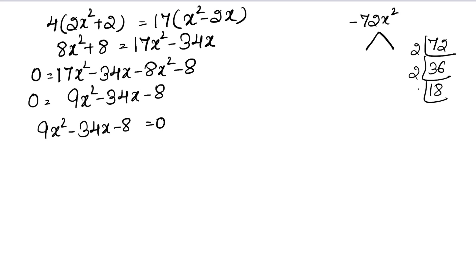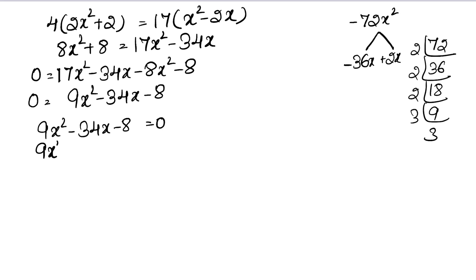Continuing the factors of 72: 18, 36, and 2. We find that 36 and 2 work: 36 − 2 = 34. Since the middle term is negative and they subtract, the larger factor takes the negative sign of the middle term. So we write: 9x² − 36x + 2x − 8 = 0.